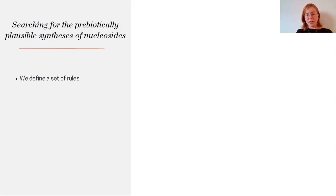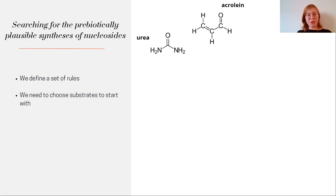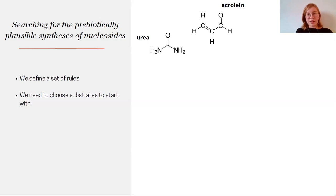Having this set of rules, we need to choose some initial substrates to start our network. In our case, it was urea and acrolein. Having these compounds, we just apply this predefined set of rules on them, which tells them how they should interact with each other. We iterate this operation — we repeat it a given number of times — and in the output we receive a given number of generations of molecules, which correspond to the number of iterations we performed.